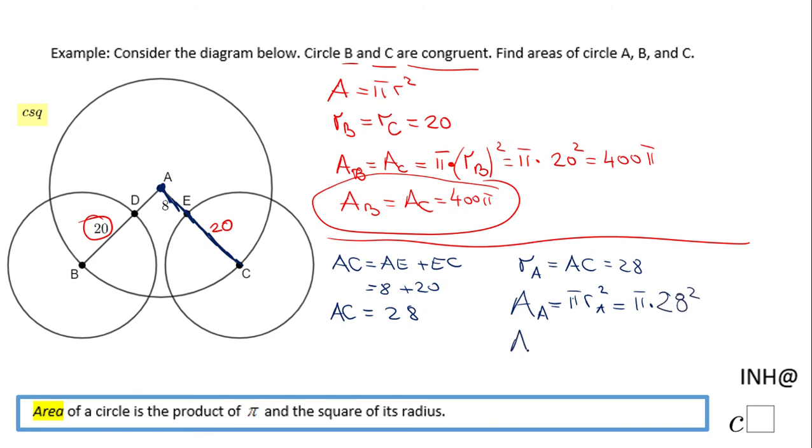The final answer for the area of circle A, and I'm going to keep the answer in π, is going to be 28 squared, which is 784π.